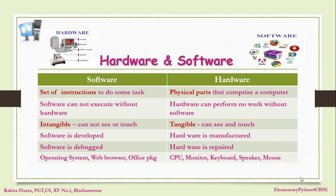Software is said to be developed, whereas hardware is manufactured. When there is some problem in hardware, it is said to be repaired, whereas for some error in software, we debug it. Some examples of software are operating system, web browser, MS Office, etc. Some examples of hardware are the CPU, monitor, keyboard, mouse, speaker, etc.